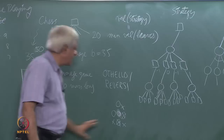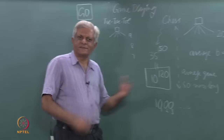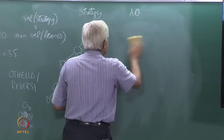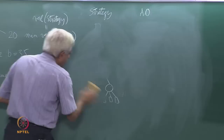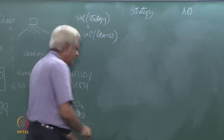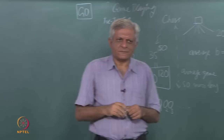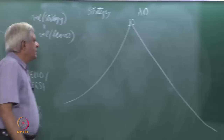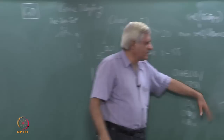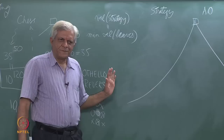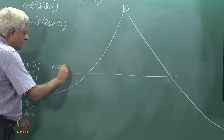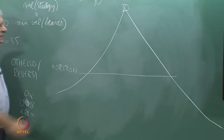So how do we play a game whose tree we cannot access completely? We do what humans would do — we do a partial lookahead. In most game-playing programs you do a limited lookahead, which means that instead of searching a practically infinite exponentially growing tree, we cut off at some level. Some people call this a horizon — you cannot see beyond that — and this is called the number of plies. This is k-ply if the depth is k.